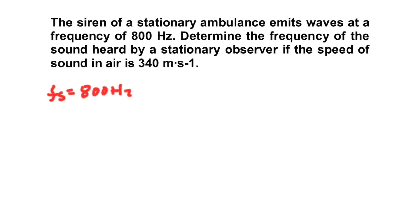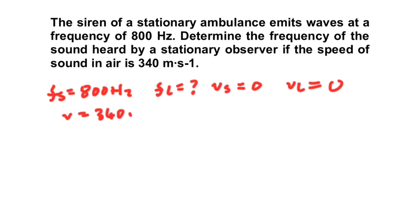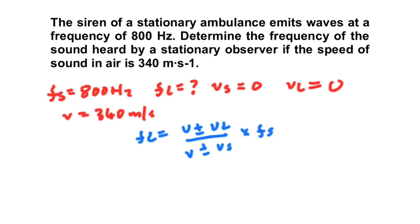The frequency emitted by the sound source is 800 Hz. We want FL, the frequency observed by the listener. The velocity of the sound source VS is 0 m/s — it is stationary. The velocity of the listener VL is also 0 m/s. The velocity of sound in air V is 340 m/s. Using the equation FL = [(V ± VL) / (V ± VS)] × FS, we substitute the values.